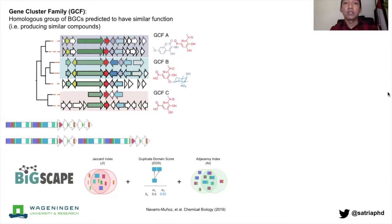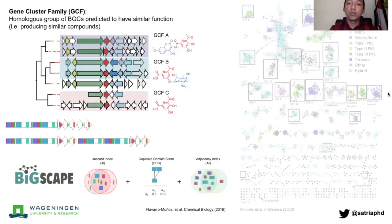For all the BGCs that we have as input, we perform all-to-all pairwise comparison and build a network or graph and then use them to perform gene cluster family calling or clustering.